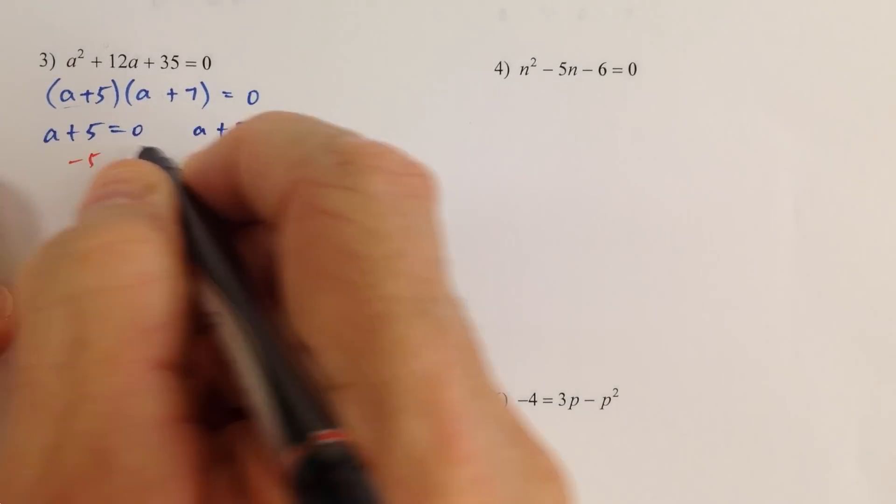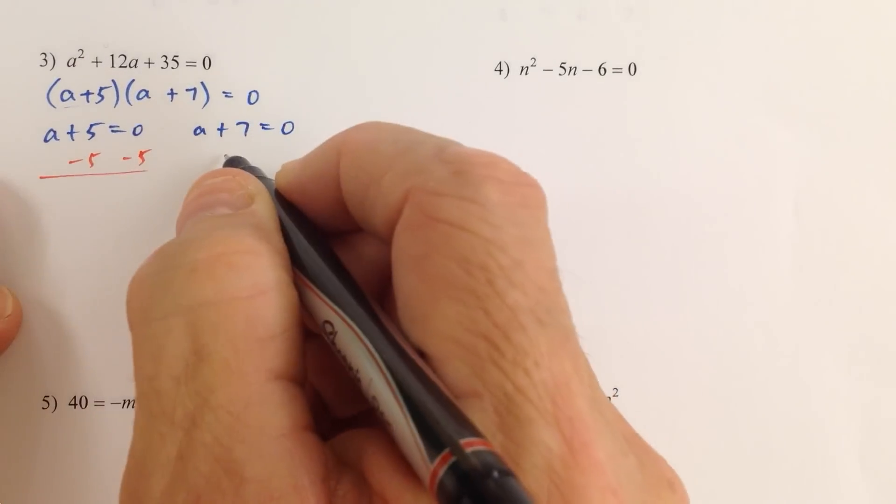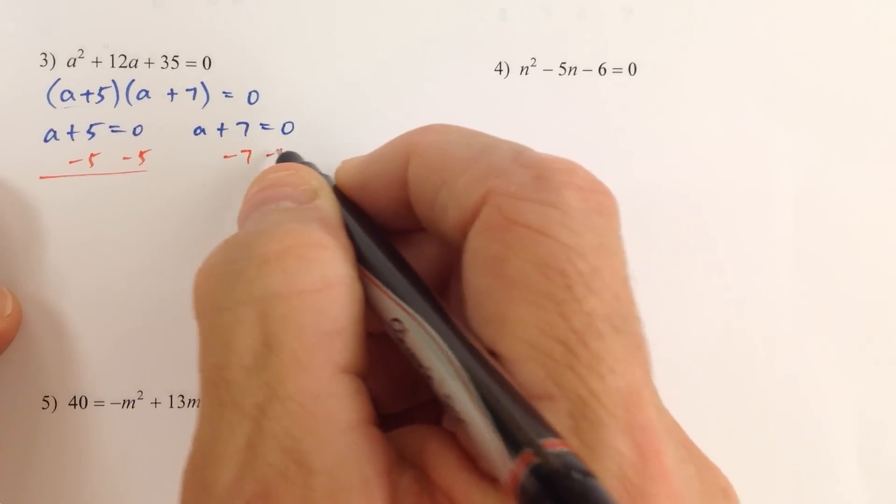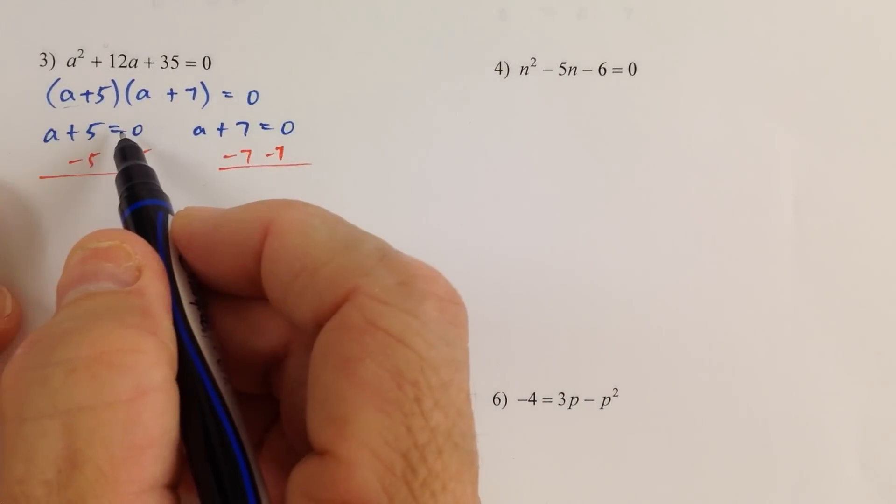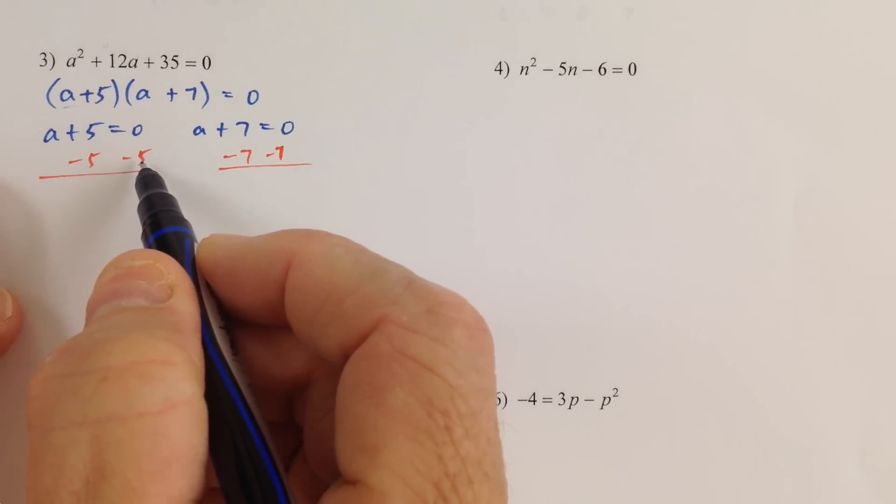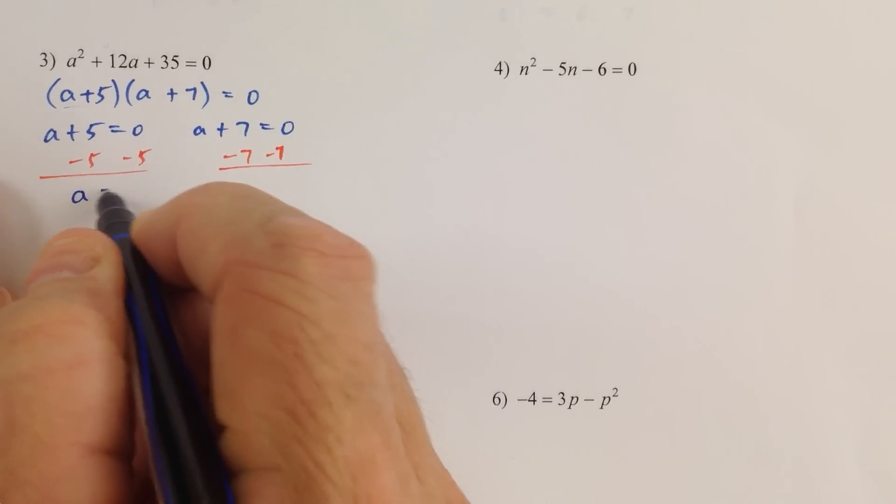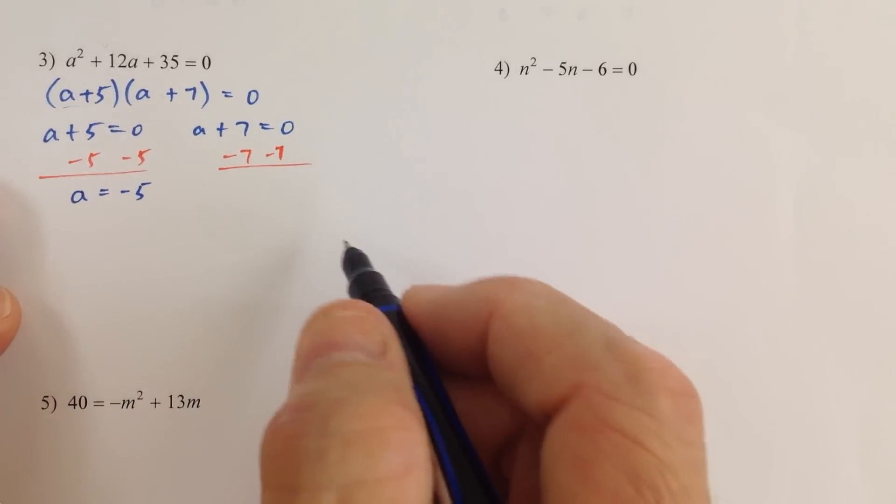We're going to solve for the a in each of these equations. So we solve for a in this first equation by subtracting 5 from both sides, getting the variable by itself, we have a equals negative 5.